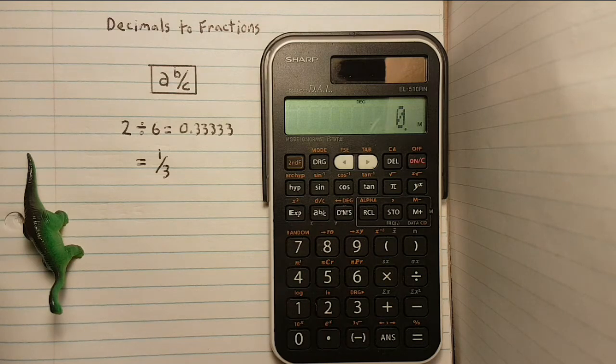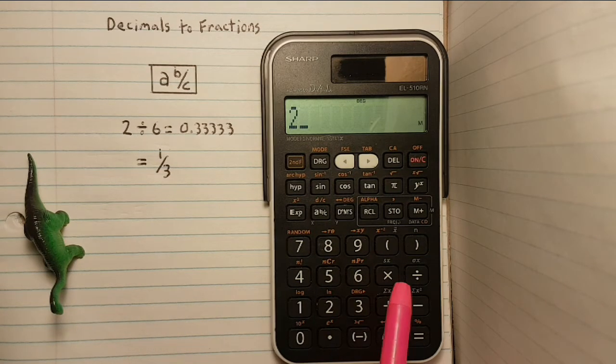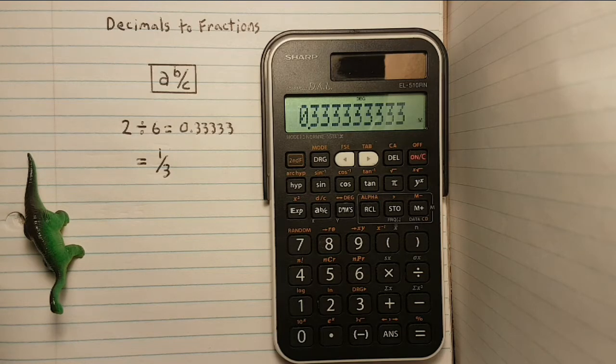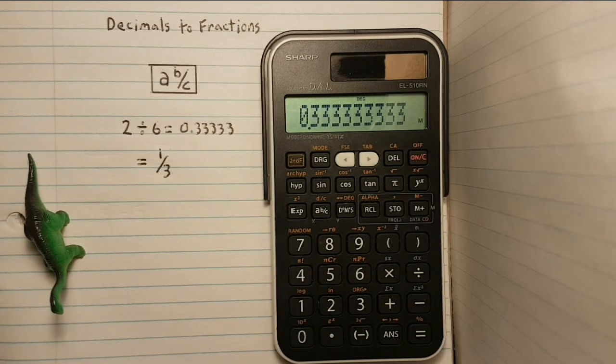First we will place a decimal on the screen. Let's try 2 divided by 6 equals. This gives us a long string of numbers that would be a pain to write out.